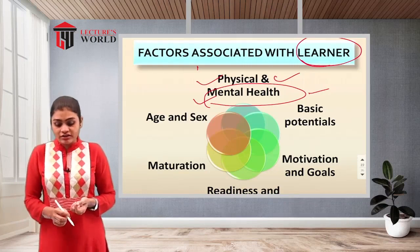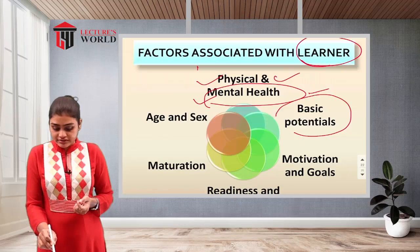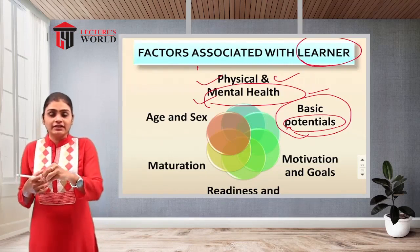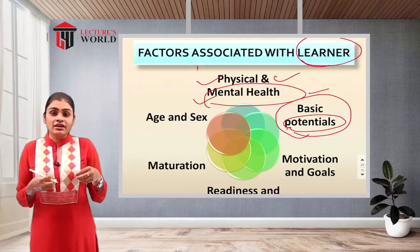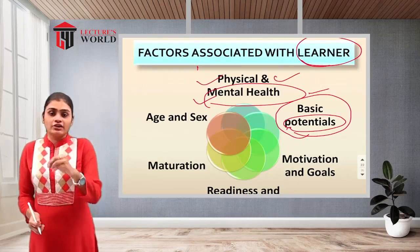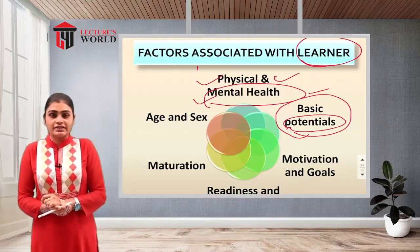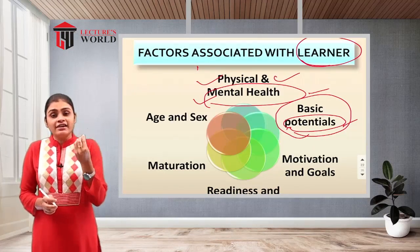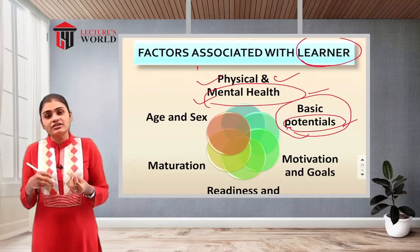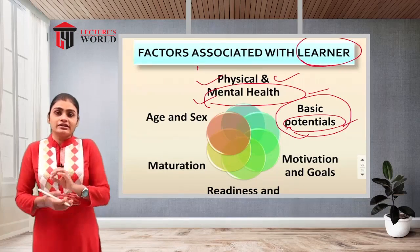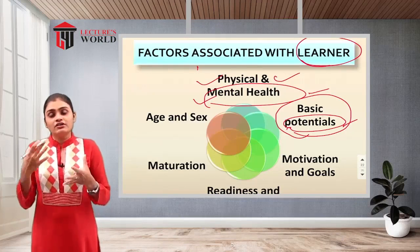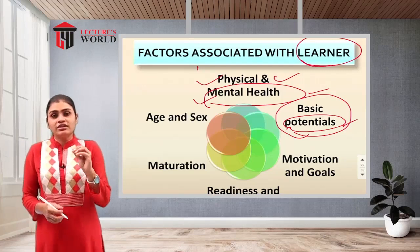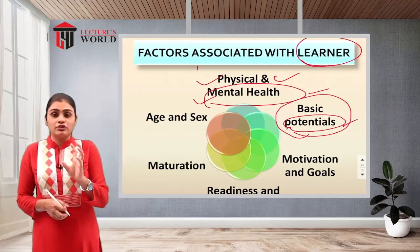The next learner factor is basic potentials — the abilities of the learner. If the learner has limitations and is not able to learn something new, the strengths and limitations affect the learning process. If the learner's IQ or intelligence level is not good, or their background knowledge is insufficient, that will affect the learning process. Intelligence level, knowledge, and background are all required as basic potentials for effective learning.